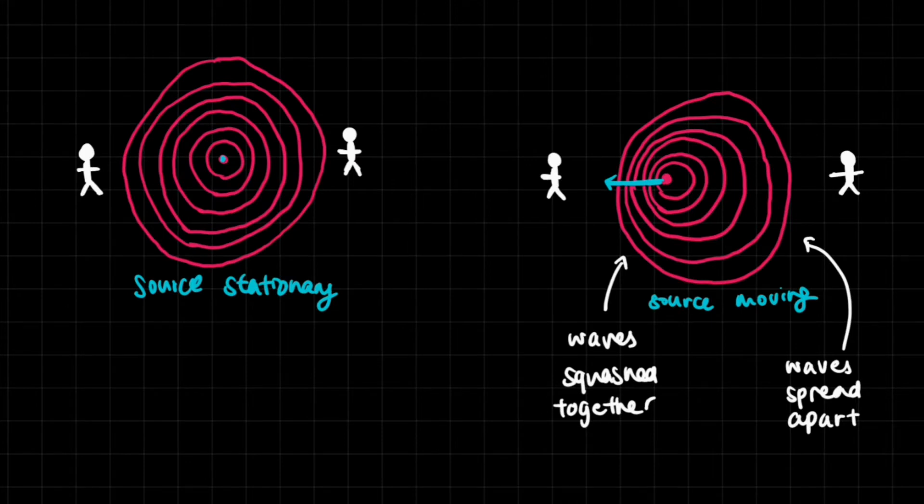So this is because of the Doppler effect. Now sound is created by sound waves and vibrations. Imagine the source of the sound is stationary - it's going to create these vibrations and the sound is going to spread out.